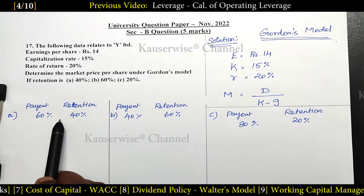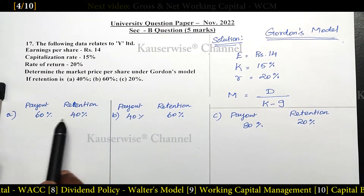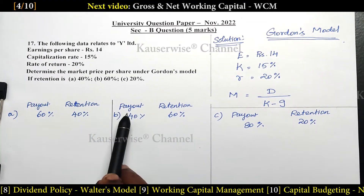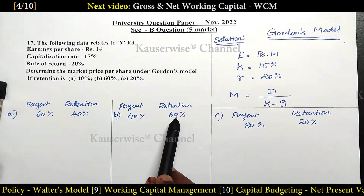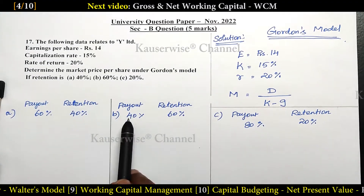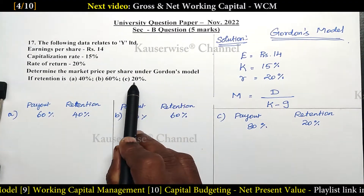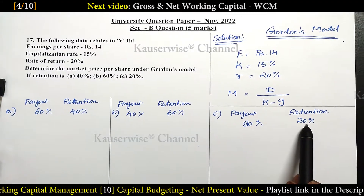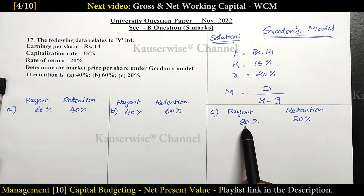For the first case: retention is 40%, so the payout is 60%. For the second case: retention is 60%, so the payout is 40%. For the third case: retention is 20%, so the payout is 80%.